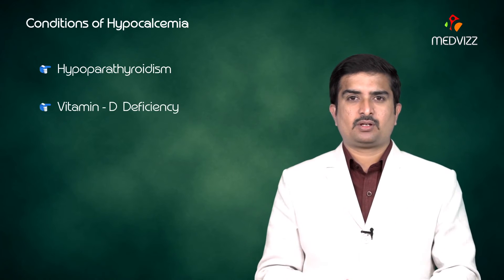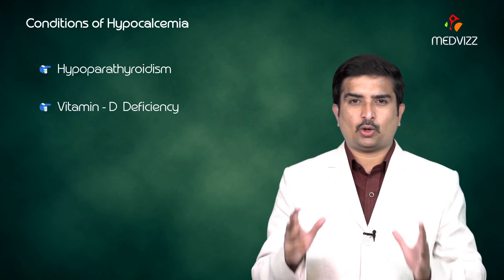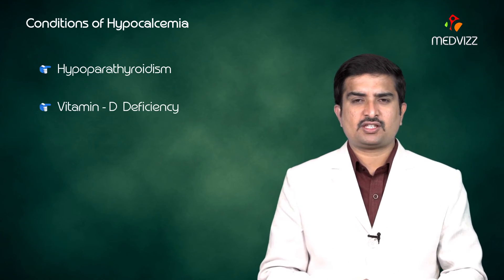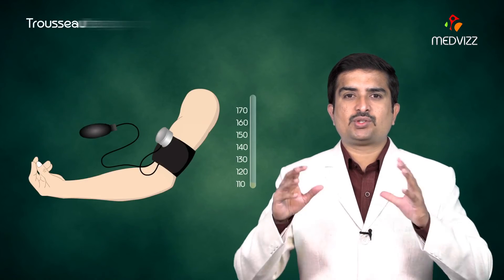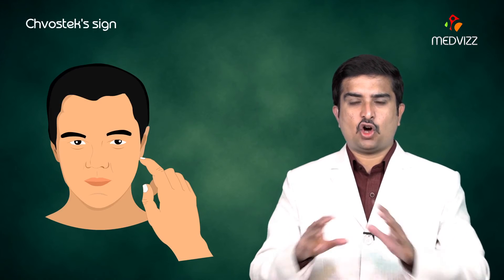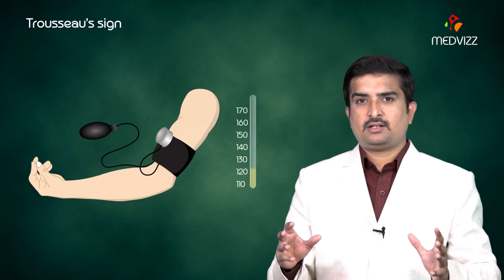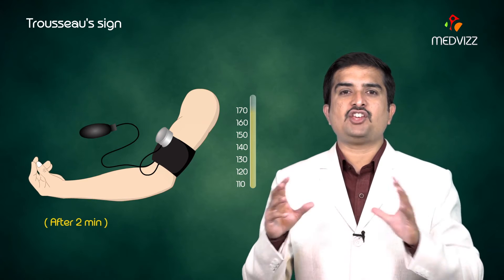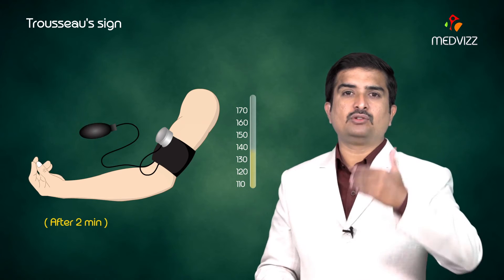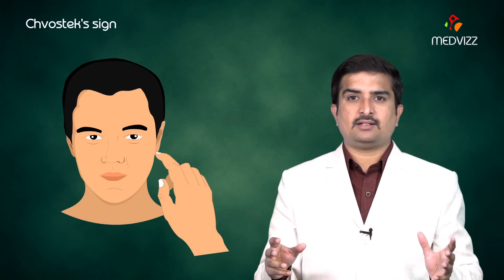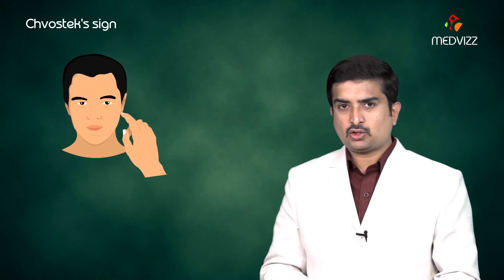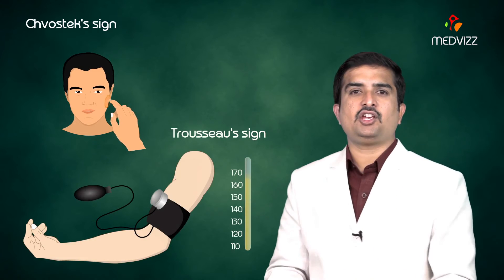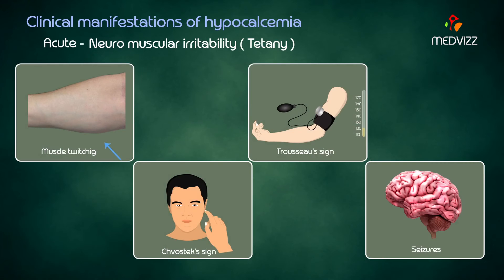In all conditions of hypocalcemia — whether due to hypoparathyroidism or vitamin D deficiency — Trousseau's sign and Chvostek's sign are positive. Trousseau's sign is carpal spasm occurring two minutes after inflation of the blood pressure cuff above systolic pressure. Chvostek's sign is twitching of the facial muscles upon superficial tapping of the facial nerve. Both are positive in all hypocalcemic states.